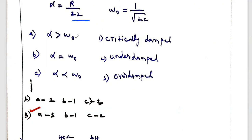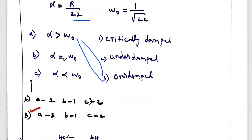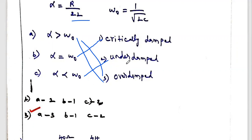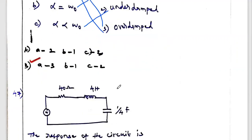If alpha is greater than omega-naught, the circuit is said to be overdamped — it produces overdamped oscillation. If alpha equals omega-naught, it is a critically damped circuit. If alpha is less than omega-naught, it is an underdamped circuit. So the correct option is A3: alpha greater than omega-naught → overdamped, alpha equal to omega-naught → critically damped, alpha less than omega-naught → underdamped.